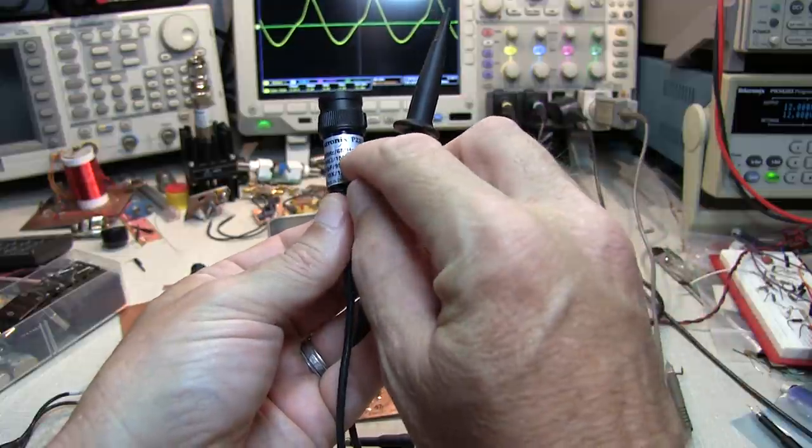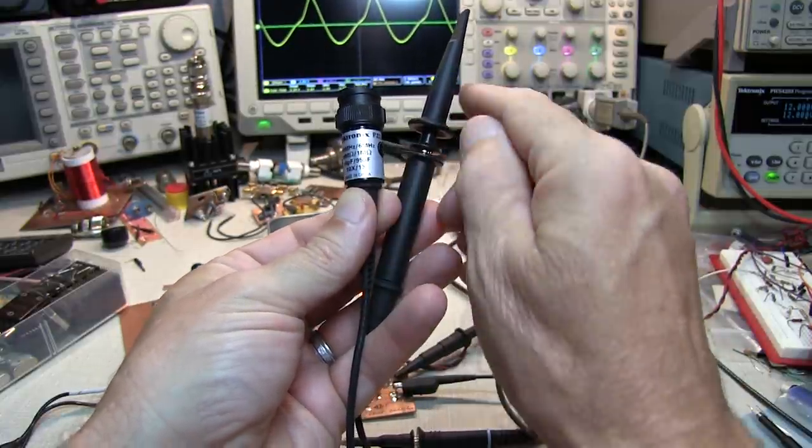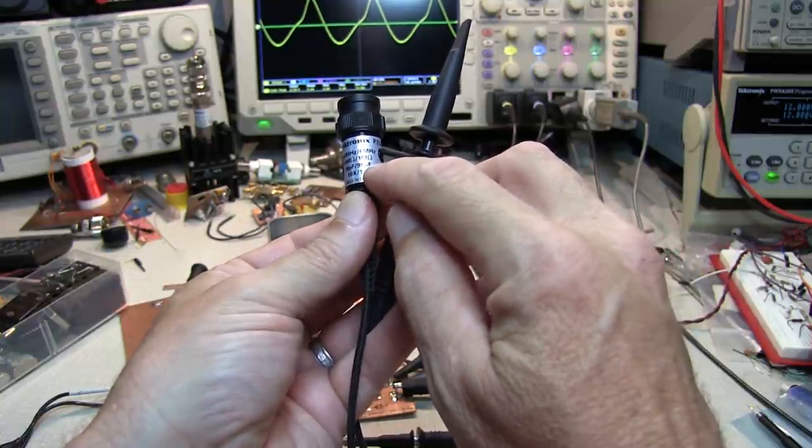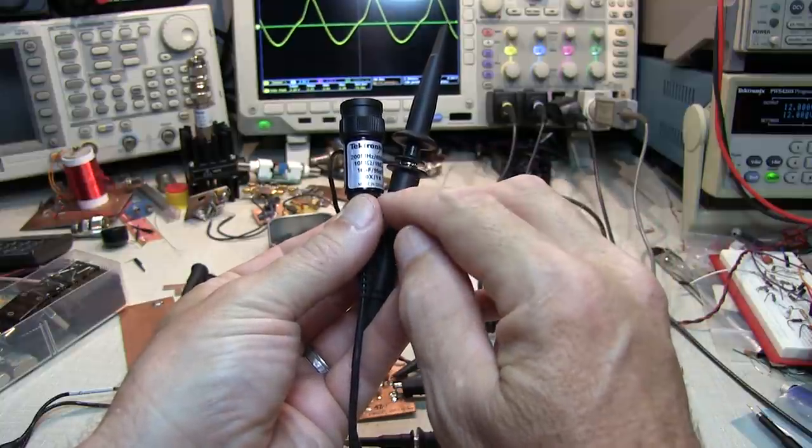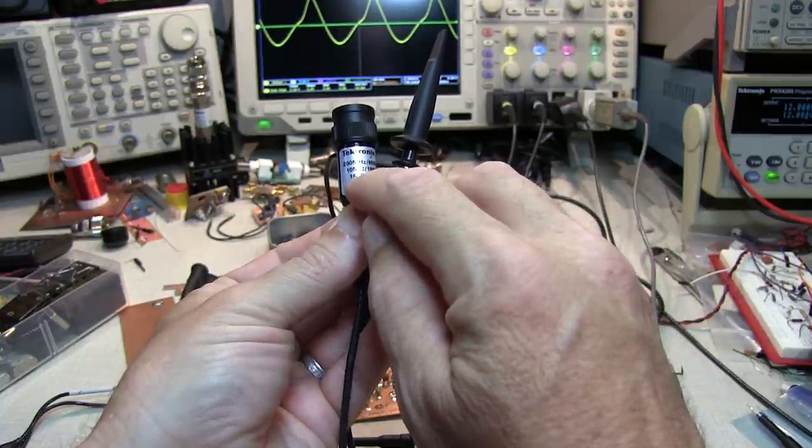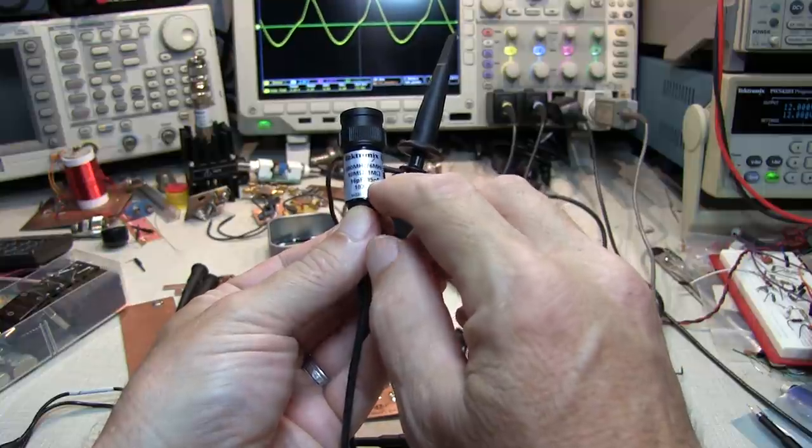In the 1x mode, it's only 6 MHz of bandwidth, 1 megaohm loading that comes from the scope, and nearly 100 picofarads of capacitive loading. In the 10x mode, you can see the bandwidth jumps to 200 MHz, it's got a 10 megaohm resistive impedance, but a 16 picofarad capacitive load. Certainly a lot less than the nearly 100 picofarad load.